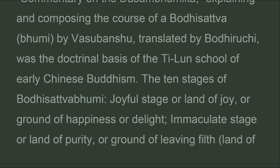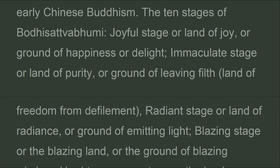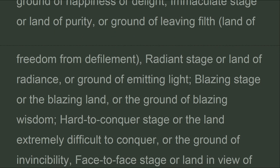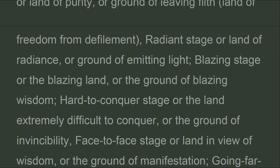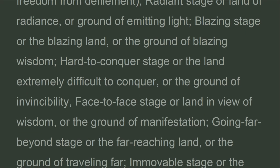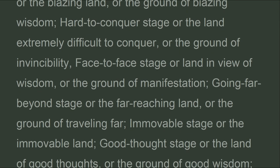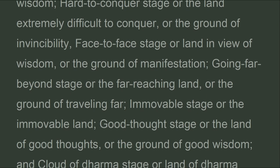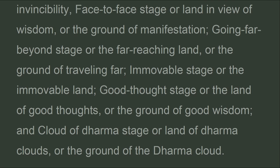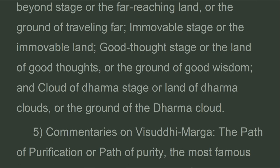The ten stages of a bodhisattva (bhumi) are: (1) Joyful Stage — land of joy or ground of happiness; (2) Immaculate Stage — land of purity or ground of leaving filth, freedom from defilement; (3) Radiant Stage — land of radiance or ground of emitting light; (4) Blazing Stage — ground of blazing wisdom; (5) Hard to Conquer Stage — ground of invincibility; (6) Face-to-Face Stage — ground of manifestation; (7) Going Far Beyond Stage — ground of traveling far; (8) Immovable Stage — the immovable land; (9) Good Thought Stage — ground of good wisdom; (10) Cloud of Dharma Stage — ground of the Dharma cloud.